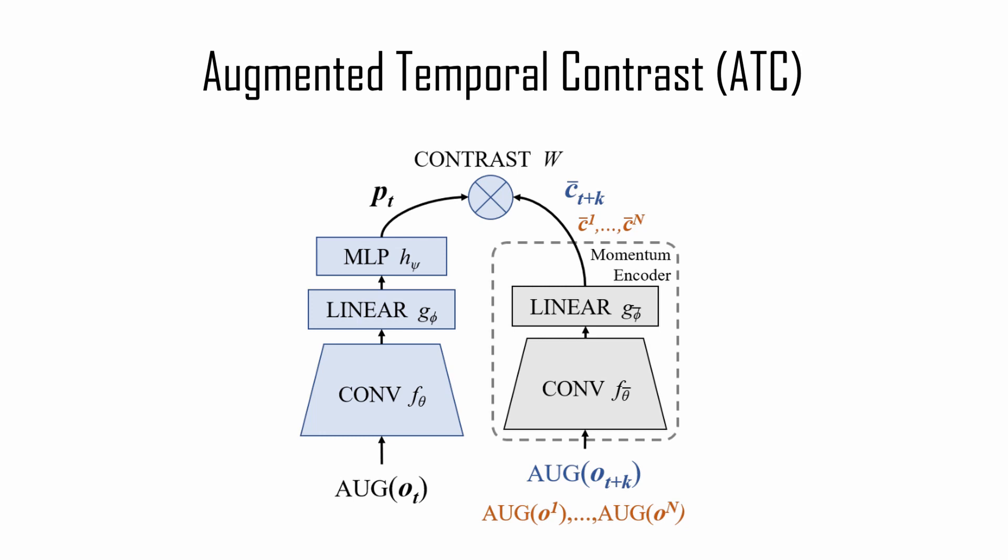which uses a contrastive loss to train a convolutional encoder to associate pairs of observations separated by a short time difference, all under a simple image augmentation.